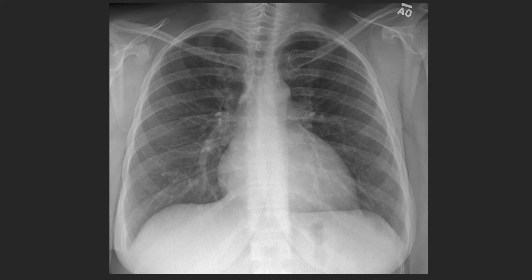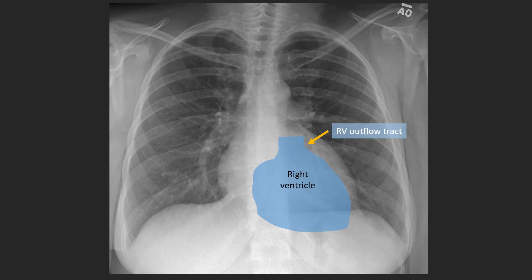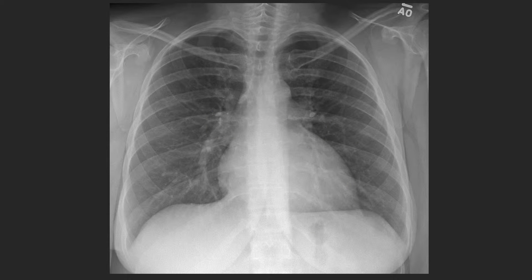Blood is now in the right ventricle, which is the most anterior chamber of the heart. On the frontal view it does not typically form a contour when normal in size. Blood leaves the right ventricle via the right ventricular outflow tract and exits the heart via the pulmonic valve, seen here in yellow, which is the most superiorly located valve and sits to the left of midline. Blood then enters the main pulmonary artery, seen here in dark blue, which creates a contour just below the aortic knob.